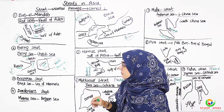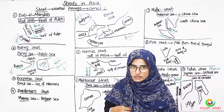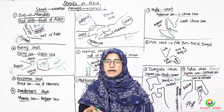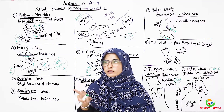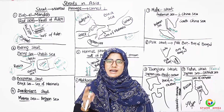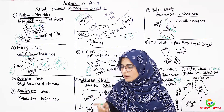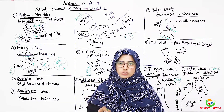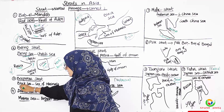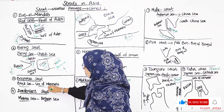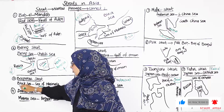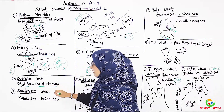Next, we will discuss the Bosphorus Strait. The Bosphorus Strait connects two water bodies: the Black Sea on one side, and the Sea of Marmara on the other side.